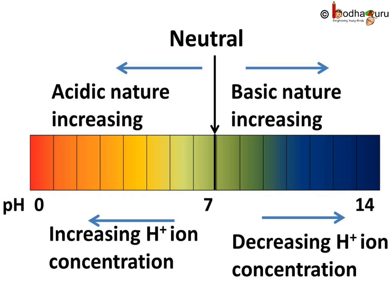Acids that give rise to more hydrogen ions are said to be strong acids, and acids that give less hydrogen ions are said to be weak acids. Bases that give rise to more hydroxide ions are strong bases, whereas bases that give less hydroxide ions are said to be weak bases.